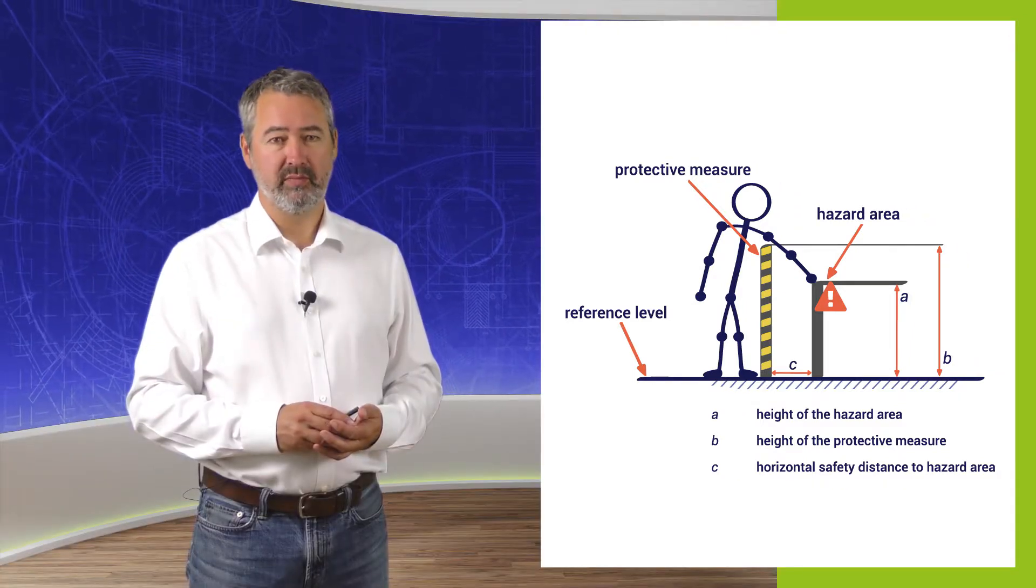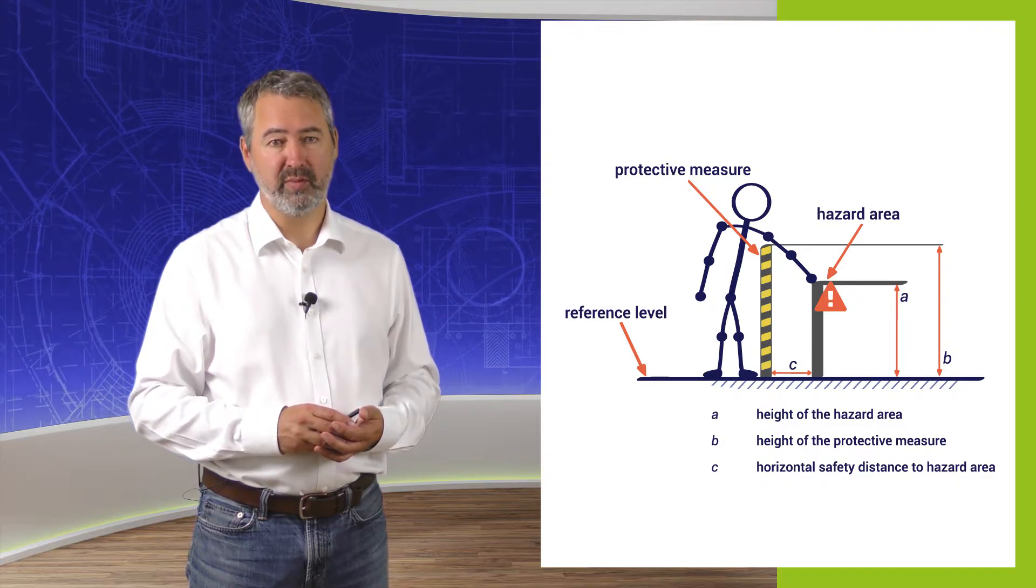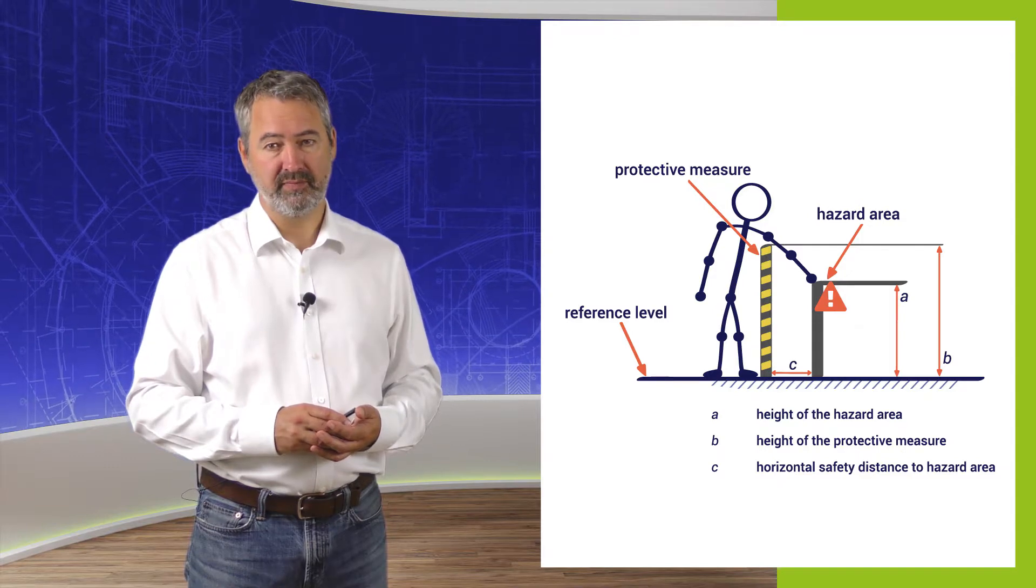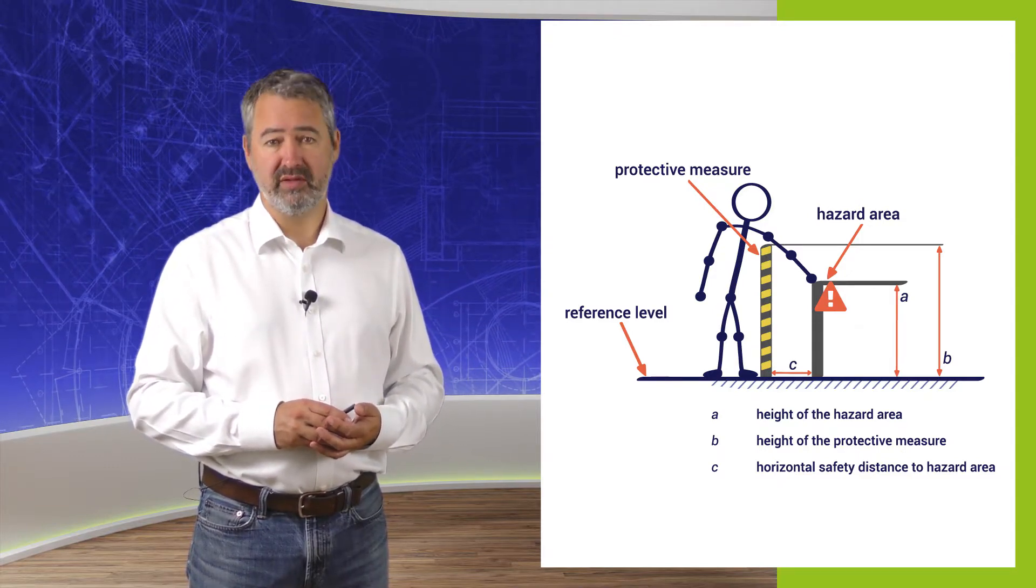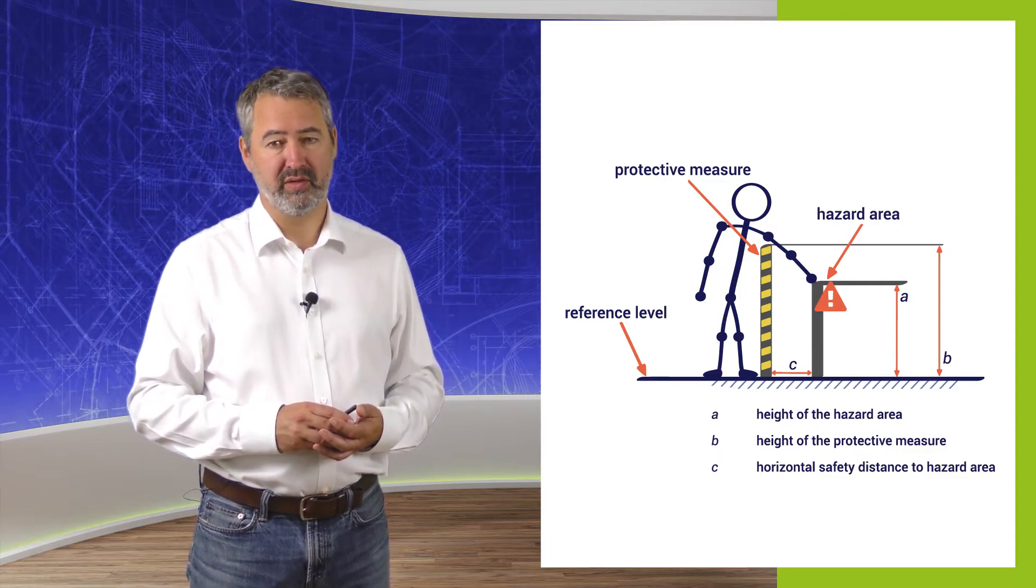One thing becomes clear. The distance to the danger point and thus the accessibility are not only dependent on the risk level, but also on the person who are to be protected. For example, people of different ages also have different physical dimensions, which is also reflected in corresponding tables.